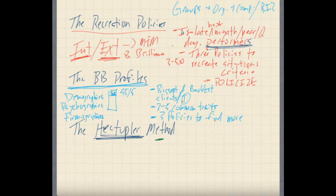With the Hectupler Method, this could be a doubler or a tripler. When we use that term, we're referring to how much money this will make. We're basically making a list of people whose compliance would mean that business would double, triple, or hectuple — that means by a factor of ten or more. When they're on board, the business will grow to double, triple, or ten times its current size. You will make ten times as much money.